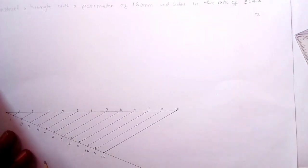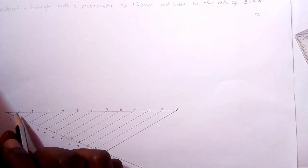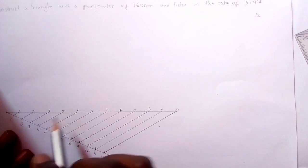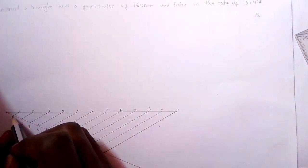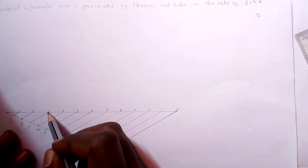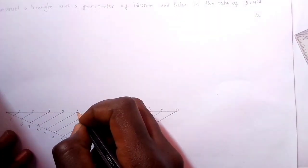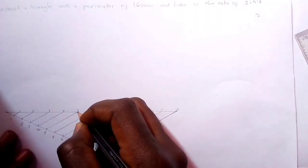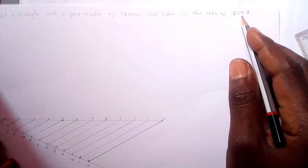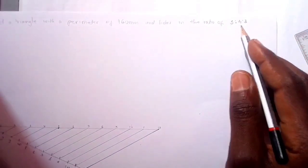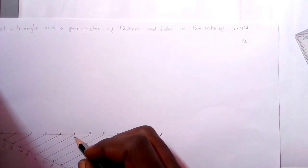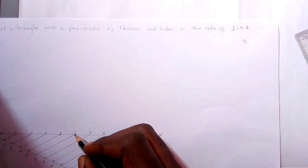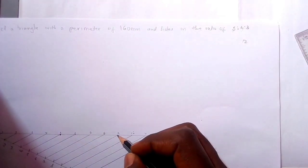Let's start with ratio 5. Count 5 parts: 1, 2, 3, 4, 5 and mark. The next ratio is 4. Continue where you have ended and count again 4 parts: 1, 2, 3, 4 and mark.